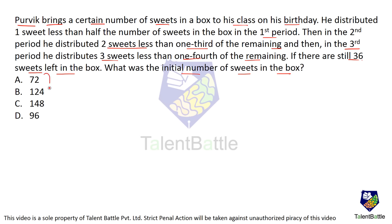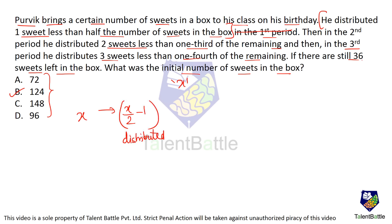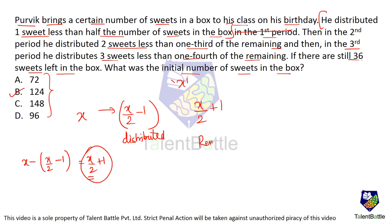You can use the options to get the answer — it comes out to be 124. But let's solve it algebraically. Let the initial number of sweets be x. In the first period he distributes x/2 − 1 sweets. So remaining is x − (x/2 − 1) = x/2 + 1, which is (x + 2)/2.